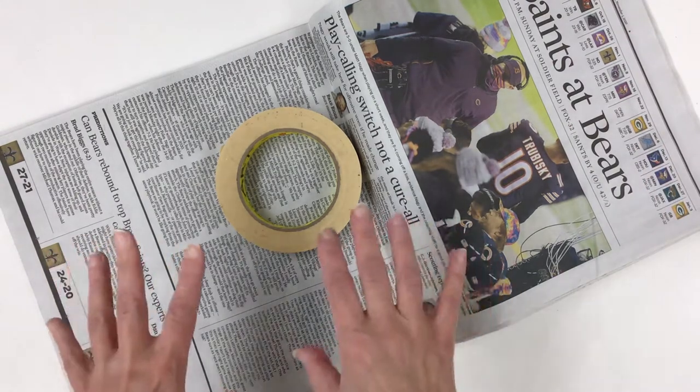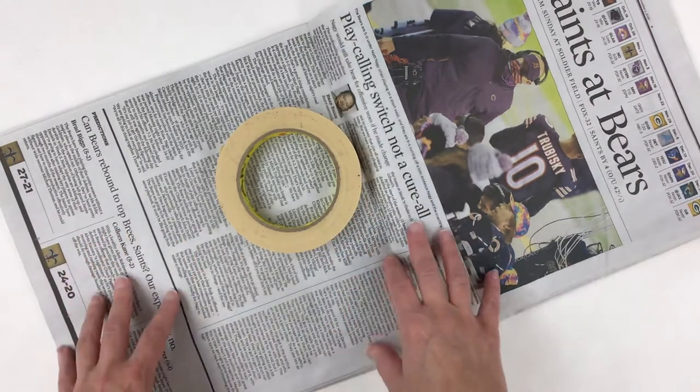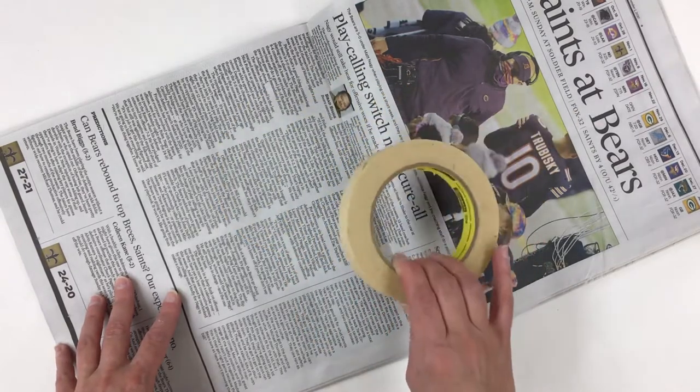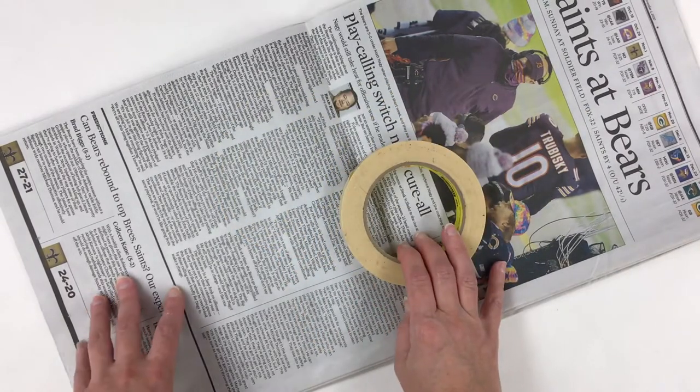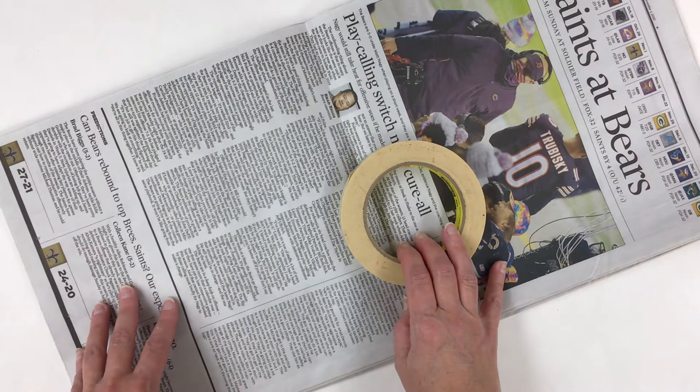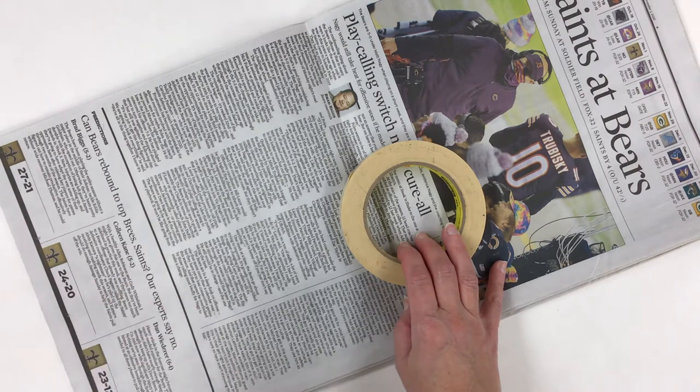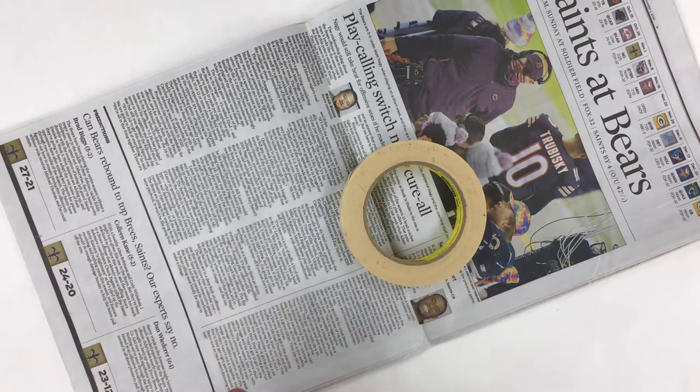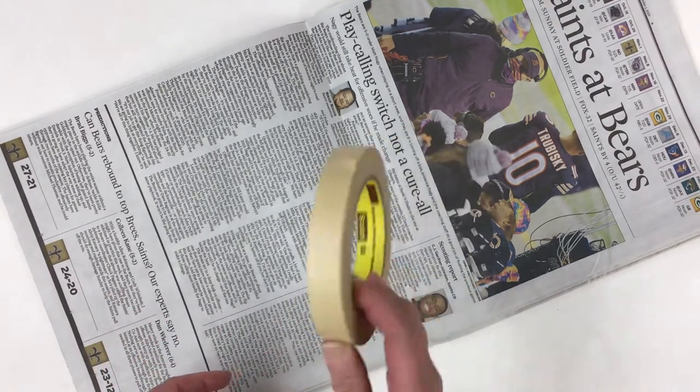So what we're going to do today is we are going to make an armature using just some real basic simple things. We're going to use some newspaper and some masking tape. People have also used wire, they've used aluminum foil, they've used just about anything that they can find that they can wrap tape around. Tape is really key.